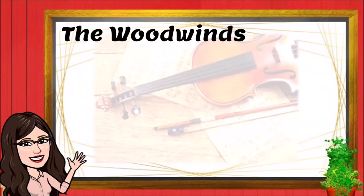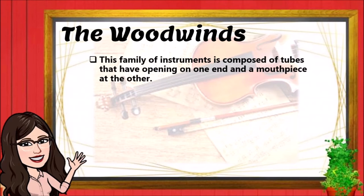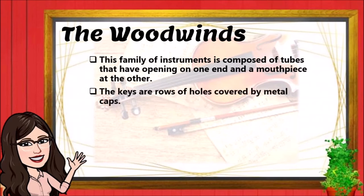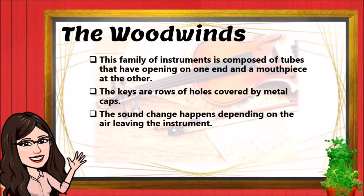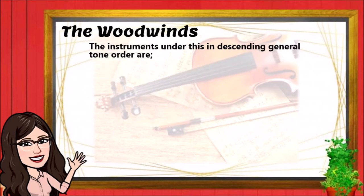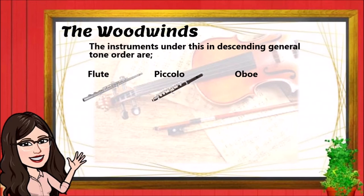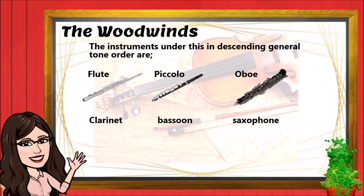Let us discuss first the woodwinds. This family of instruments is composed of tubes that have an opening on one end and a mouthpiece at the other. The keys are rows of holes covered by metal caps. The sound change happens depending on the air leaving the instrument. The instruments under this family in descending general tone order are flute, piccolo, oboe, clarinet, bassoon, and saxophone.